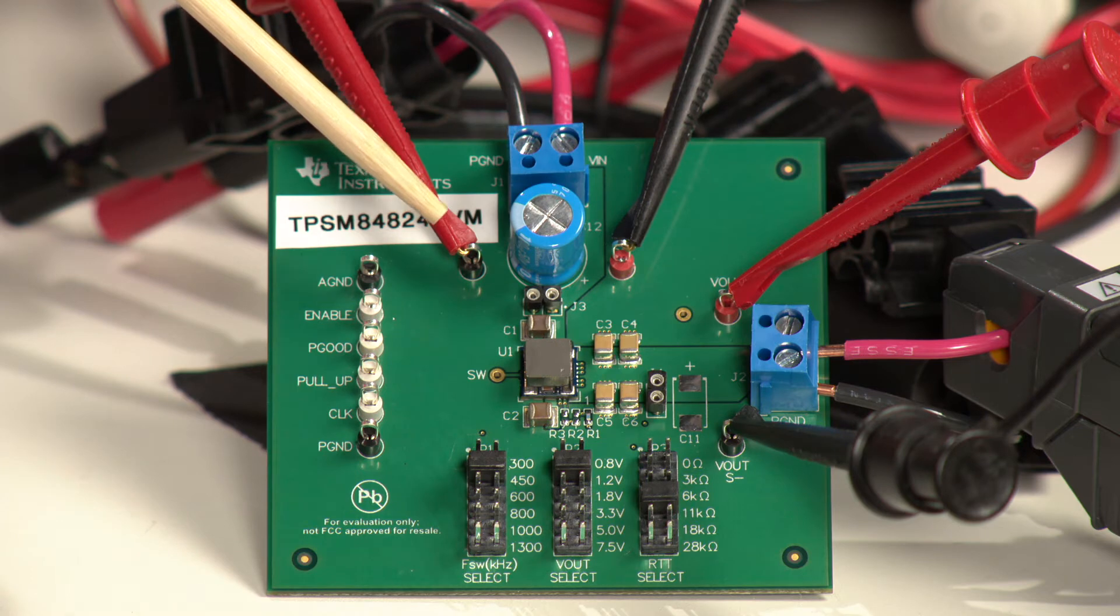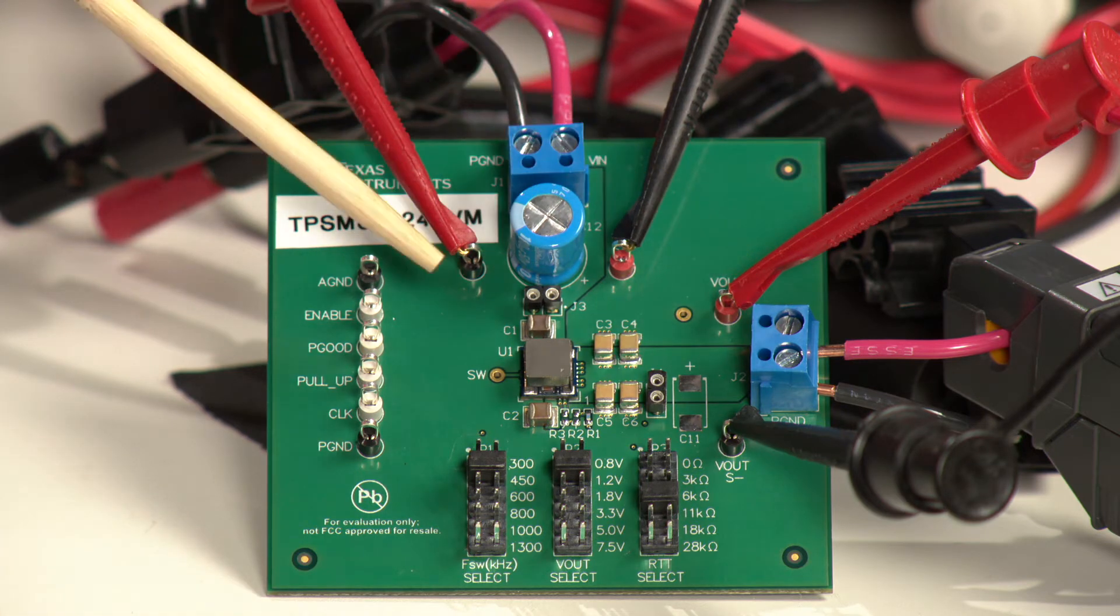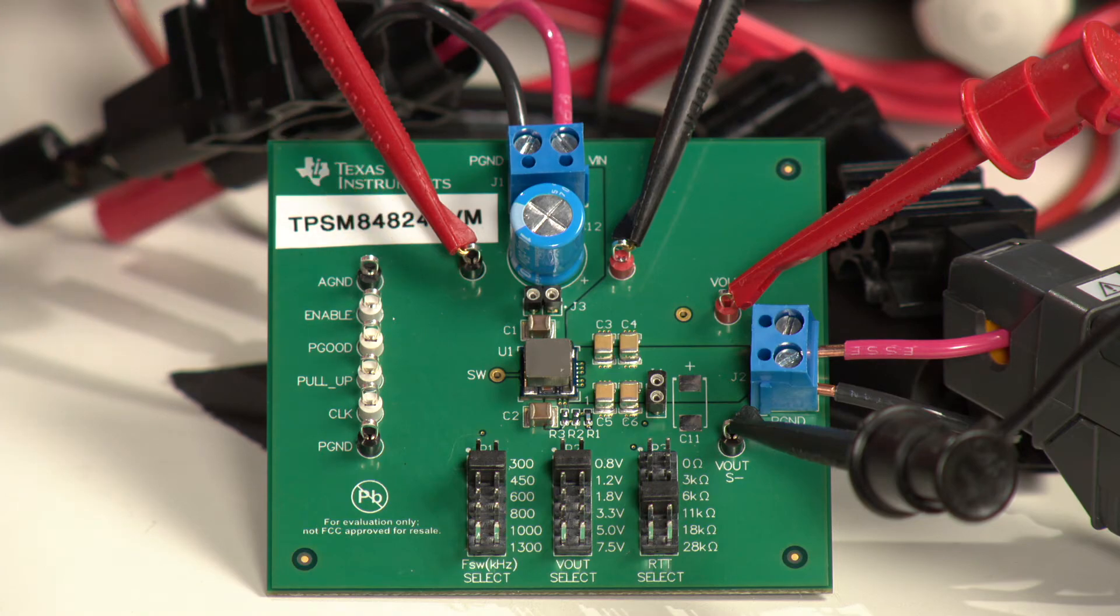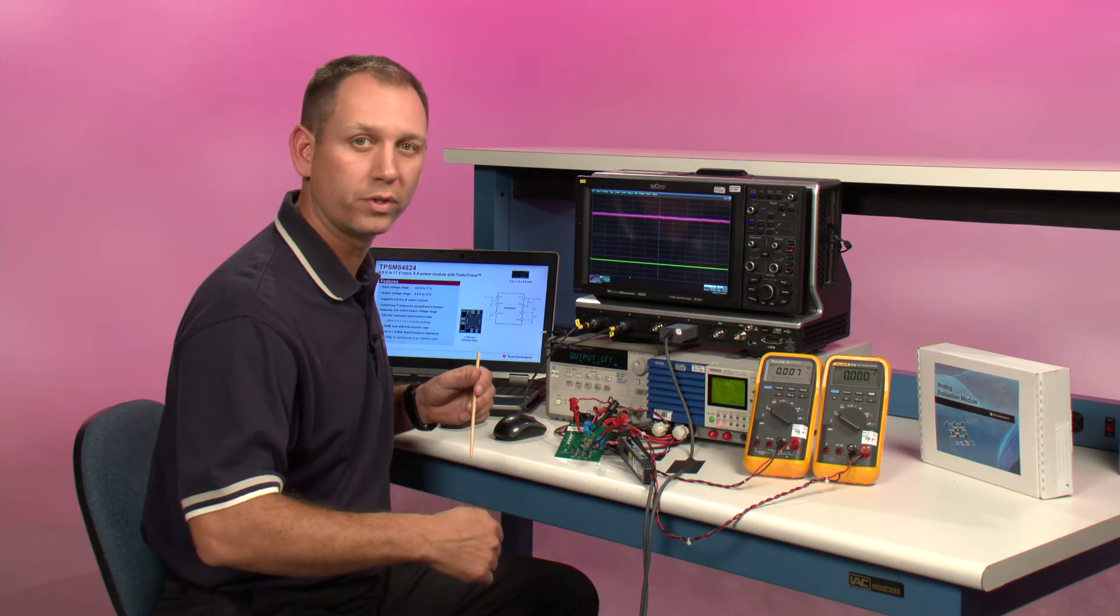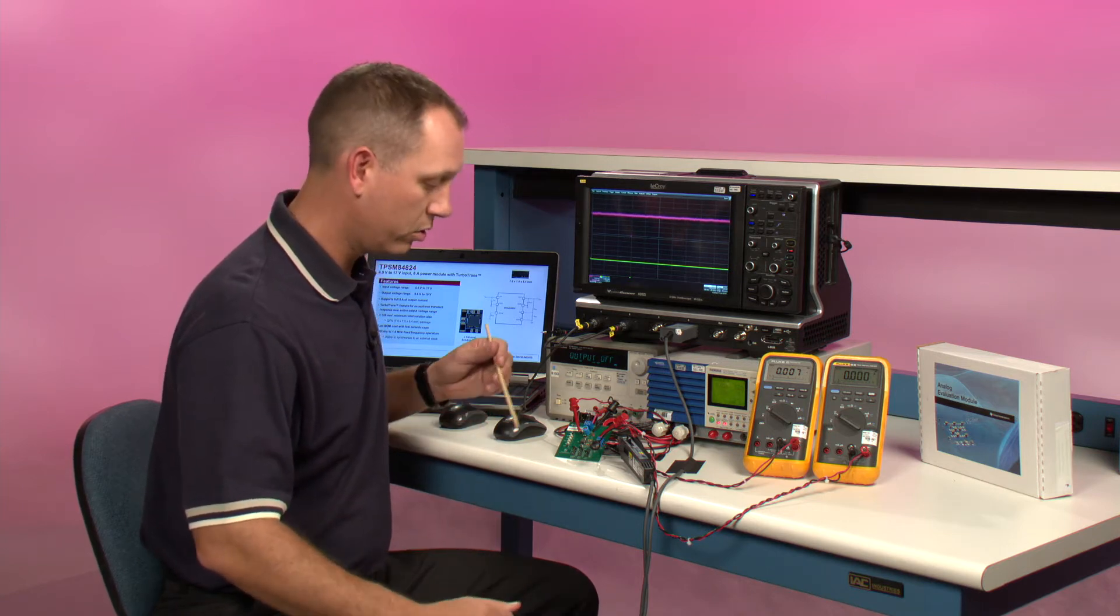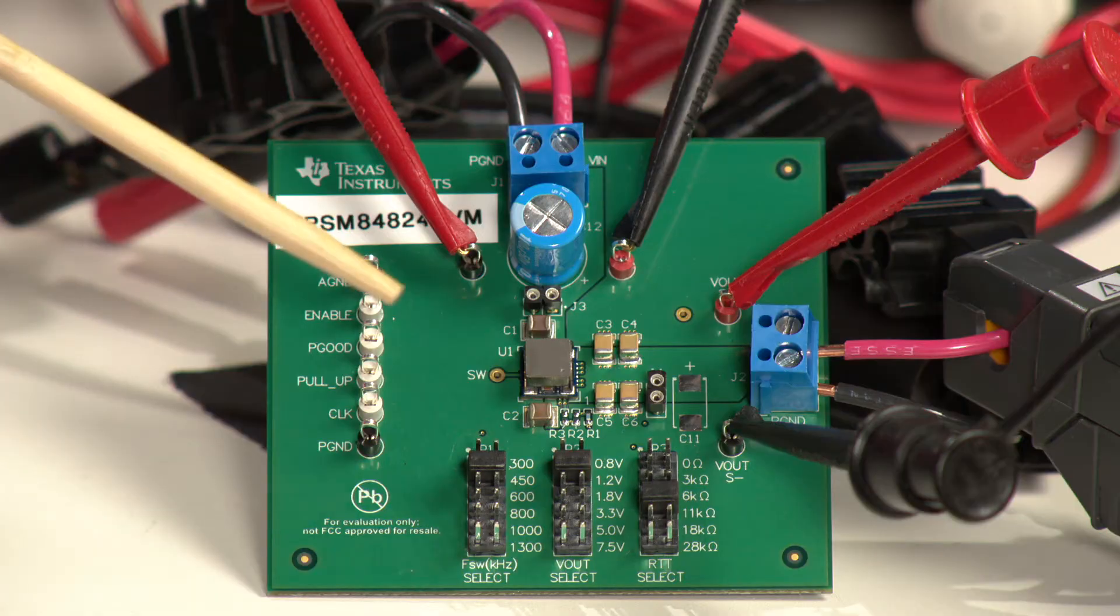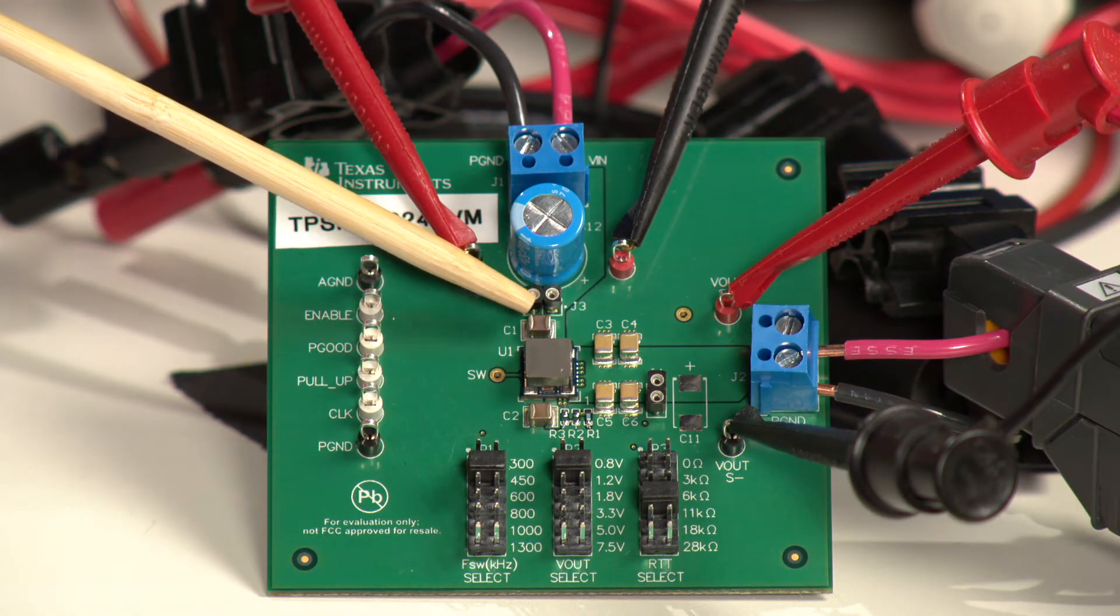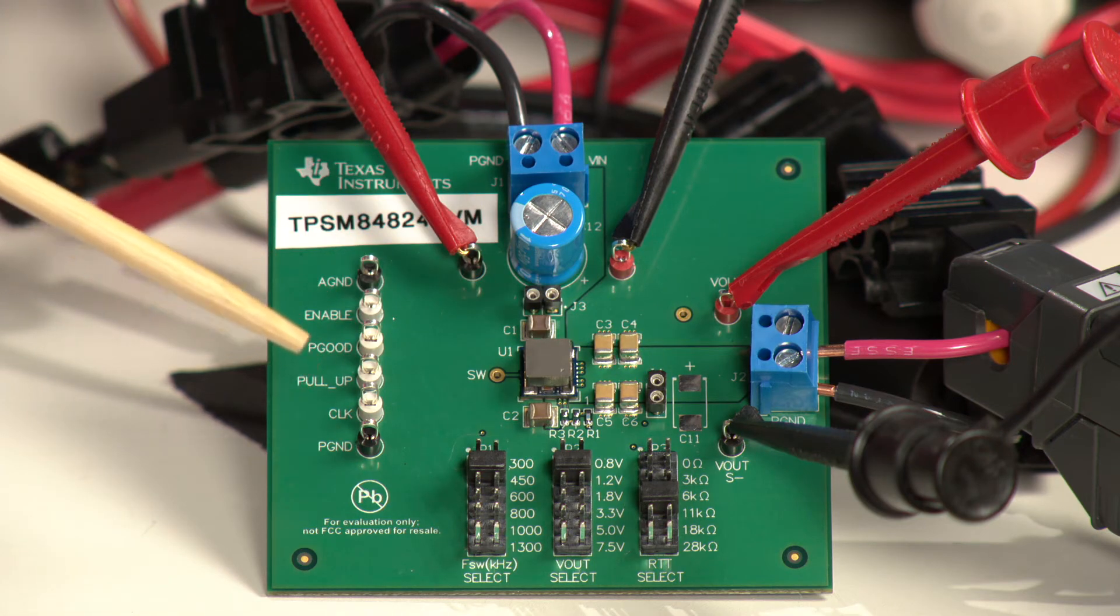There's also test points for monitoring the input voltage and the output voltage. These are meant for digital voltmeter connections. They're not made for connecting your input voltage or your load to the board because the traces aren't big enough to handle the current. There are socket test points for VIN and VOUT for oscilloscope probes and a closely coupled ground.